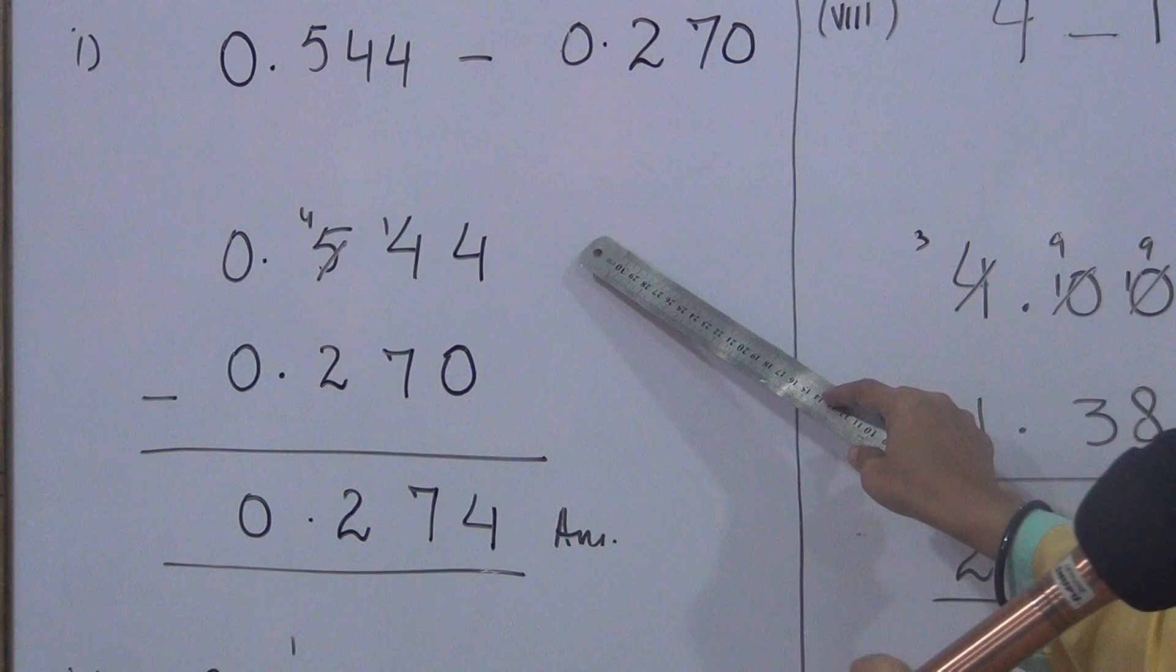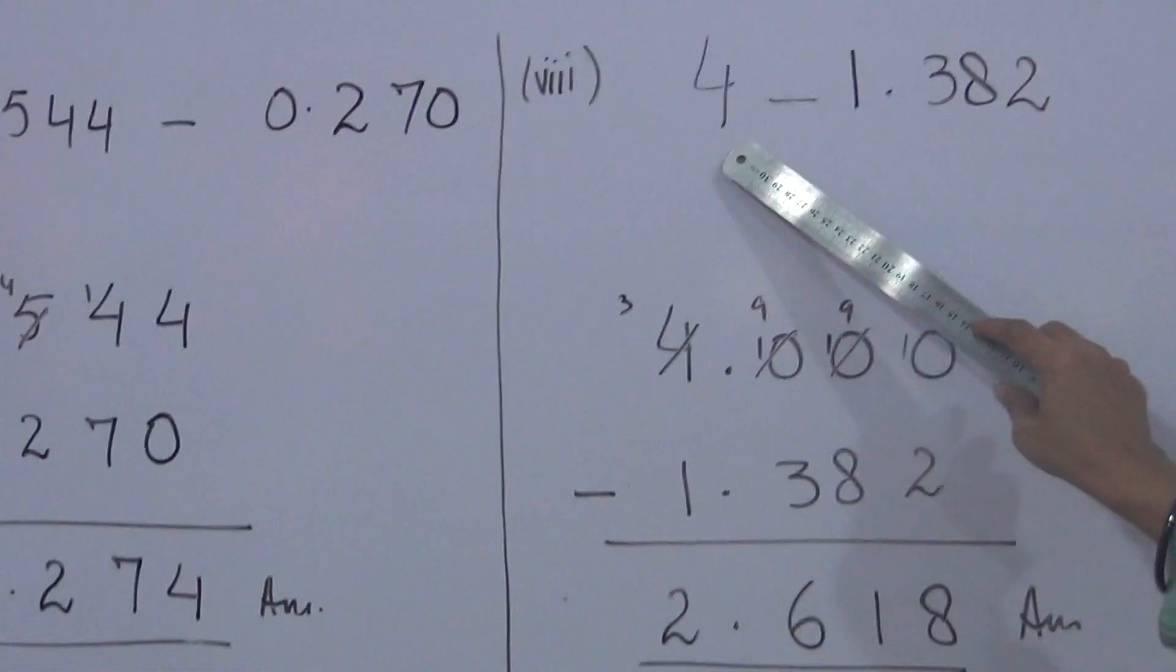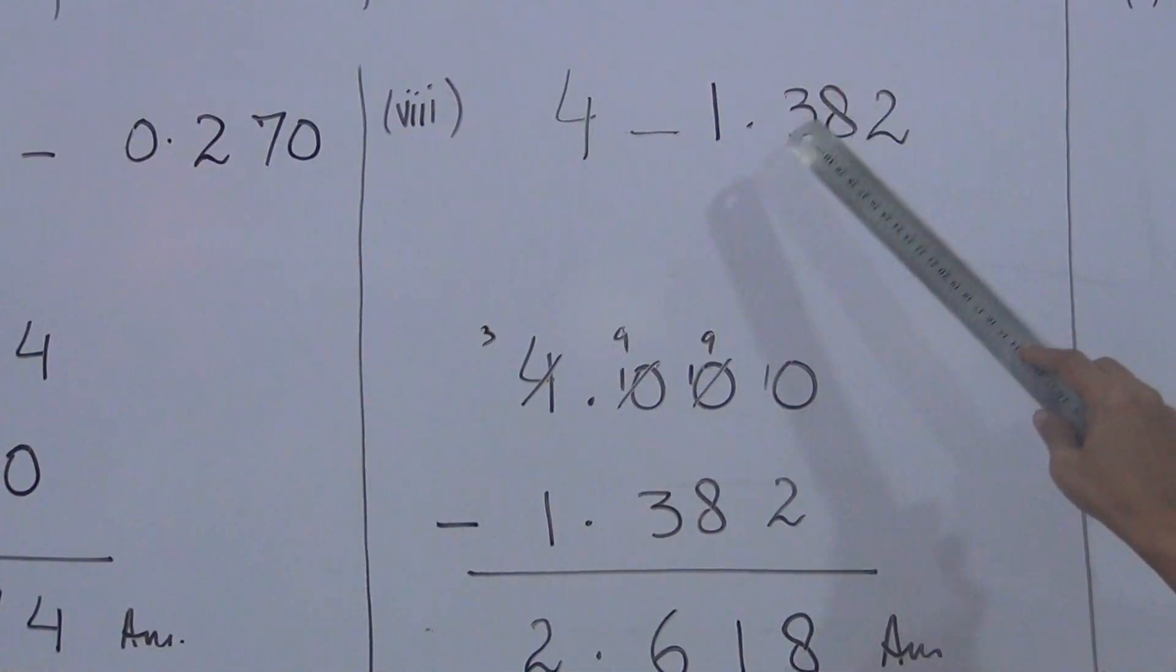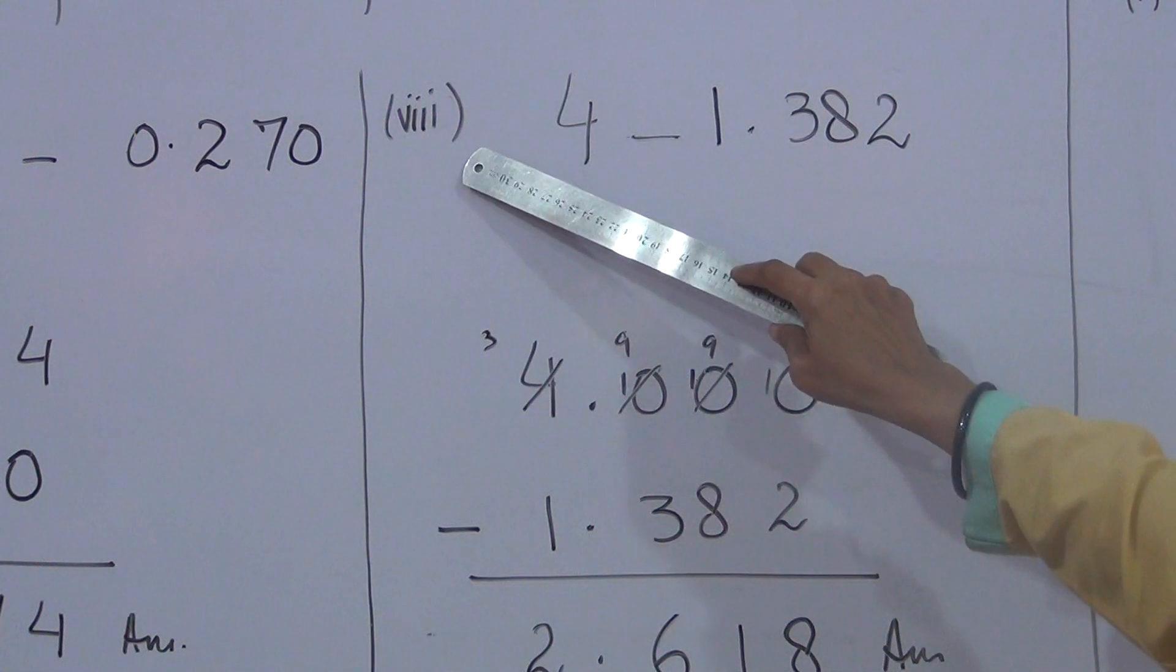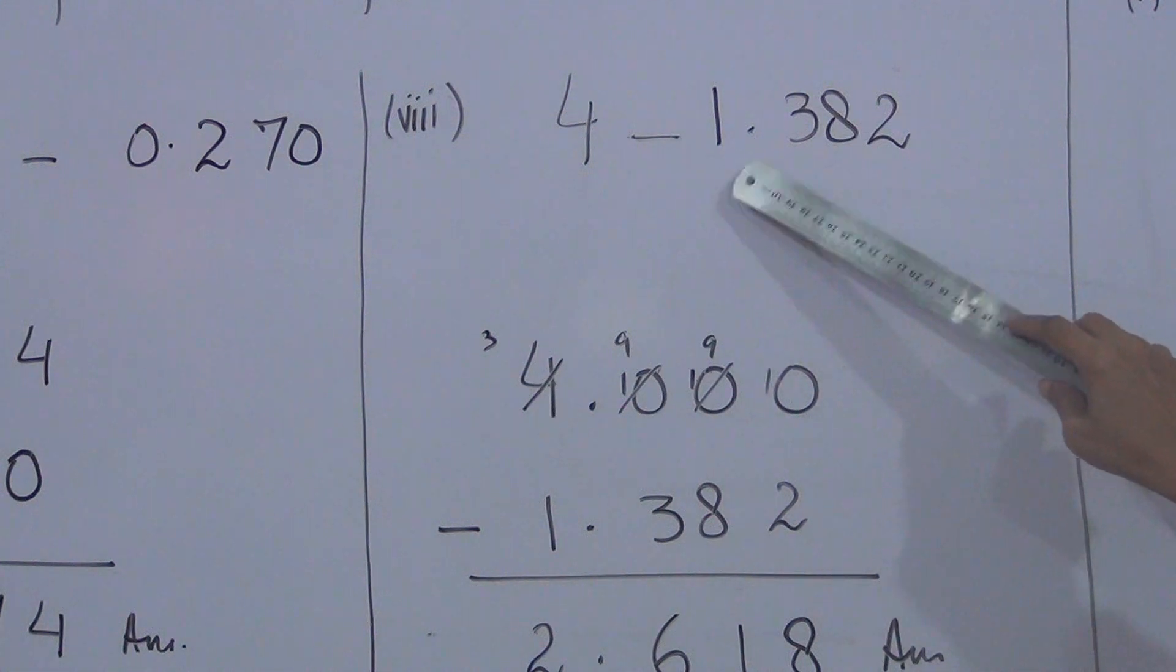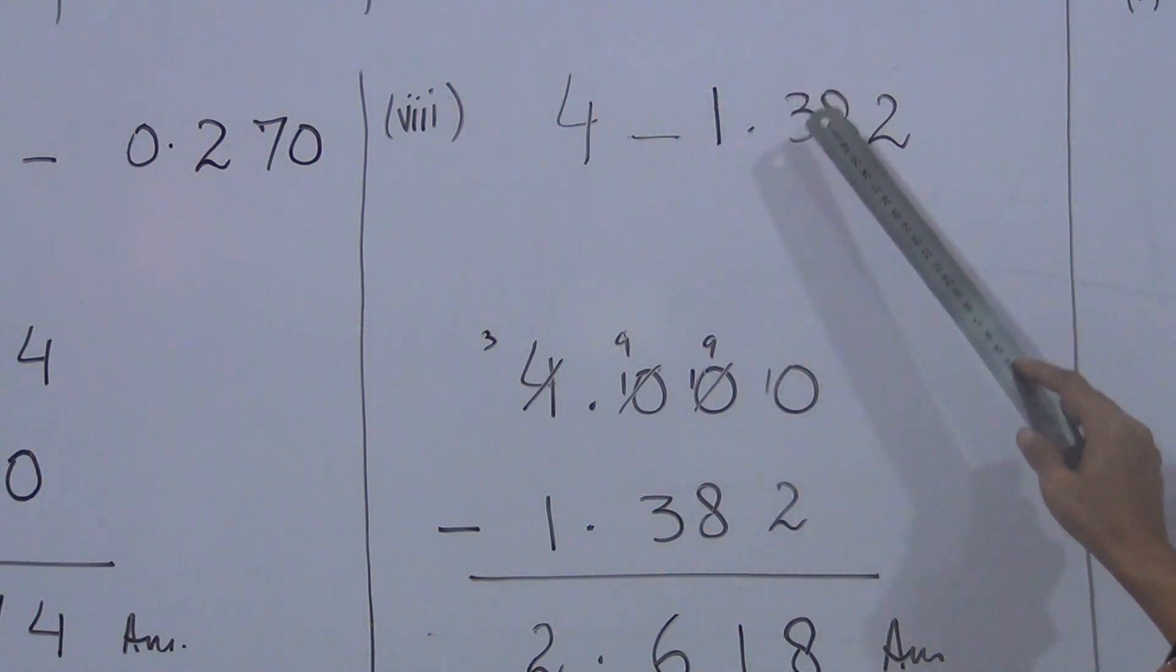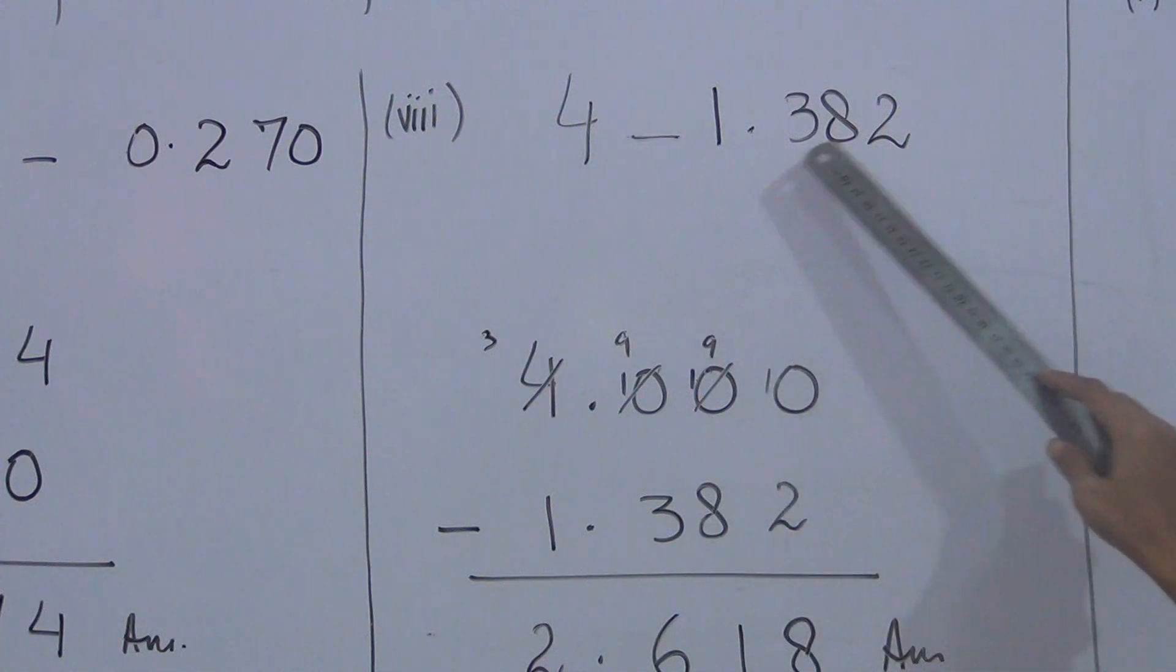The answer is 0.274. This is the answer of question number one. But if there are not equal numbers of fractional digits, if digits are not same in both the numbers, then we have to follow this method. Question number 8 is four minus 1.382. In this four, there is only four which is the whole number. Fractional part means nothing here.